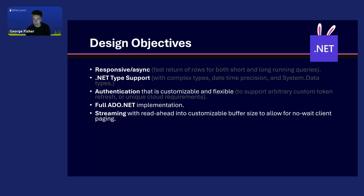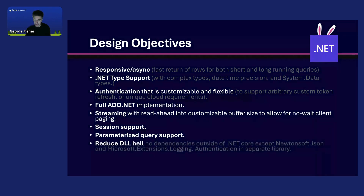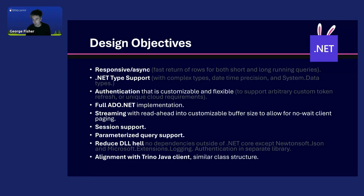We really wanted a streaming client. You can adjust the page size on the server side, but this client also allows you to read ahead into a customizable buffer size, which is very important because a lot of the time people were waiting on their paging and wanted to be able to page ahead. Full session support — a lot of integrations with Trino did not have full sessions, so you couldn't maintain your session over multiple executions. We wanted to make that trivial, along with parameterized query support. And in .NET, reduce DLL hell — reduce the dependencies. Currently the dependencies are only Newtonsoft JSON and logging, which can probably both be eliminated in time. The client also looks like the Trino Java client from a code point of view — classes are named the same wherever possible and the structure of the code is similar wherever possible.